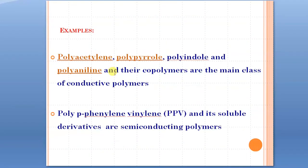Coming to examples of conducting polymers: polyacetylene; polypyrrole, which is a heterocyclic polymer; polyindole, also an example of a heterocyclic polymer; and polyaniline. These are all conducting polymers, and their co-polymers are also conducting polymers. Examples such as polyparaphenylene vinylene, abbreviated as PPV, and its soluble derivatives are also examples of conducting polymers, but they belong to semi-conducting polymers.